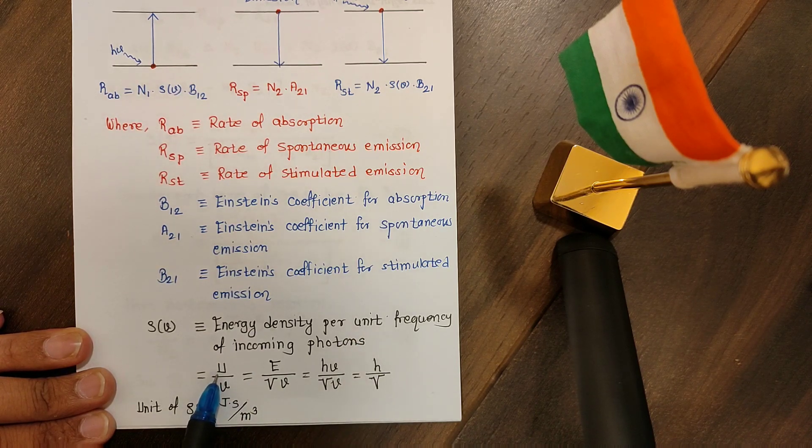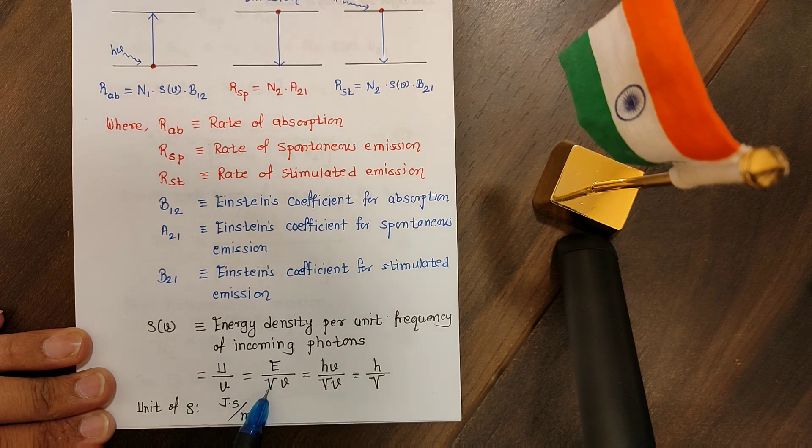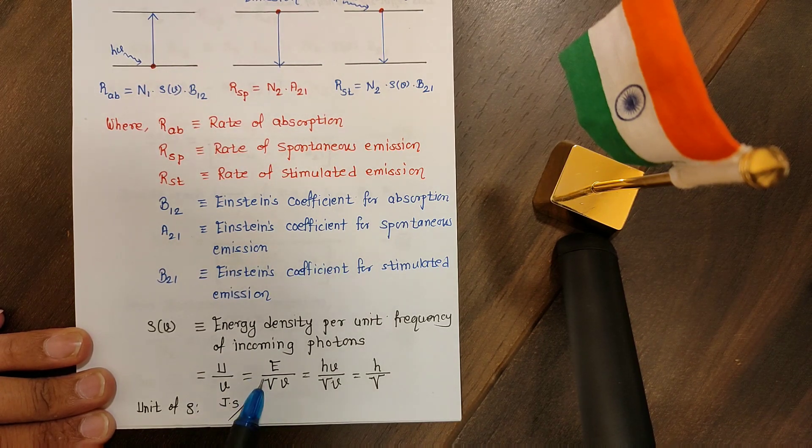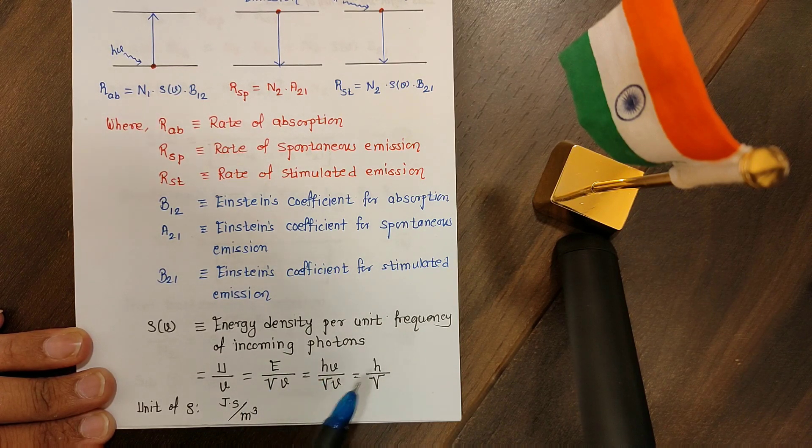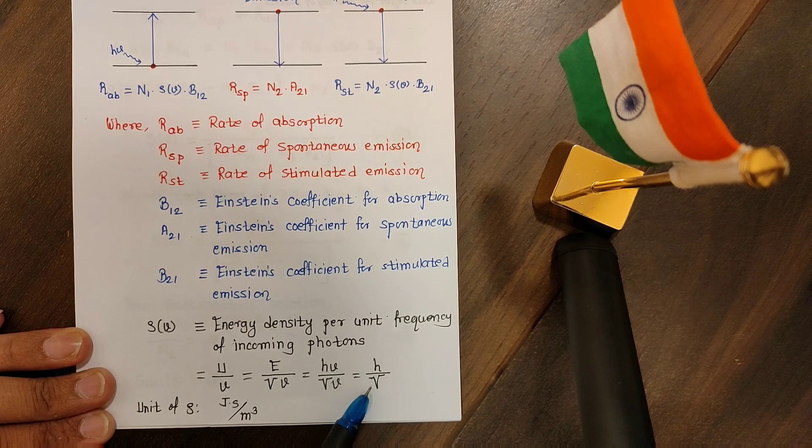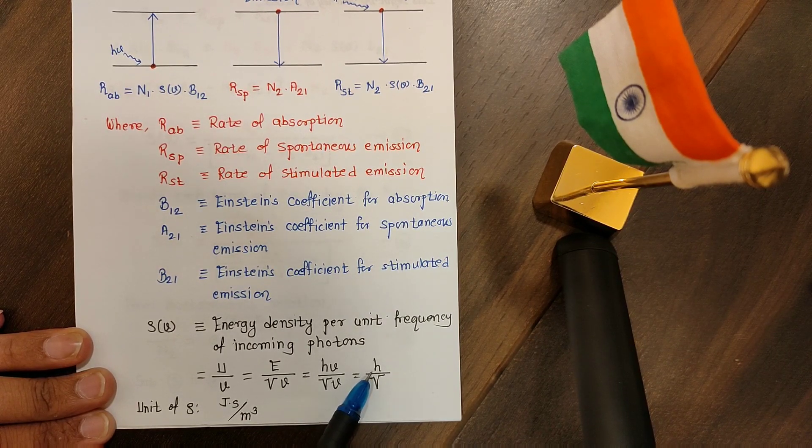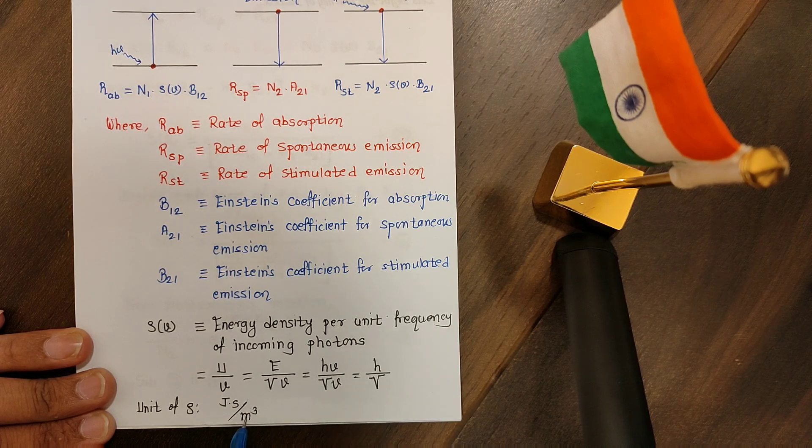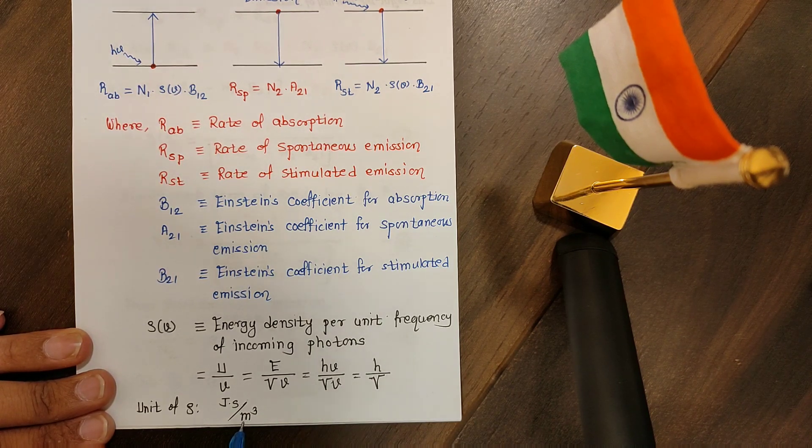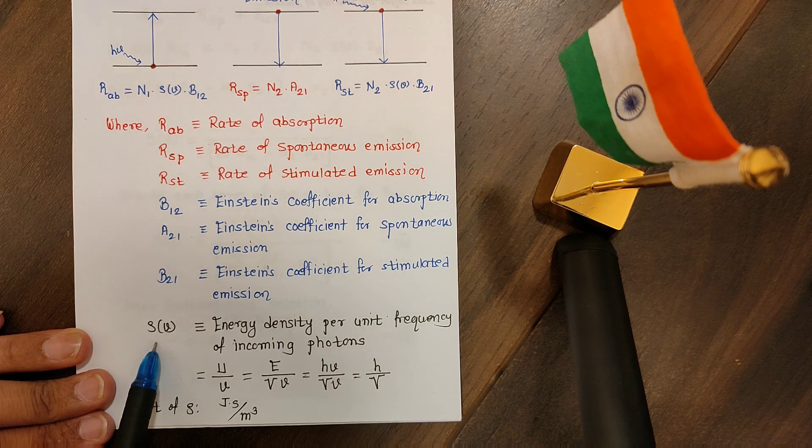What is energy density? It is u divided by frequency, that is nu. But we know that energy density u is nothing but energy per unit volume. Also, energy of photon is given by h nu. Nu and nu gets cancel, so we are left with h over v.